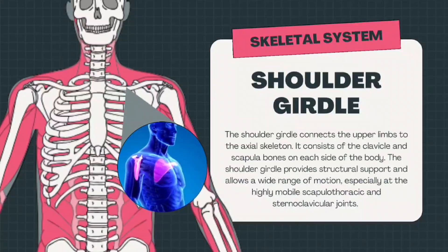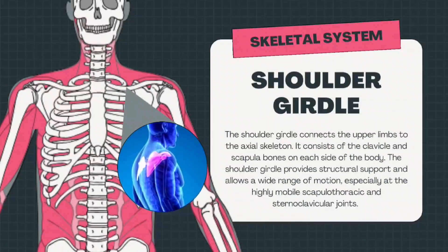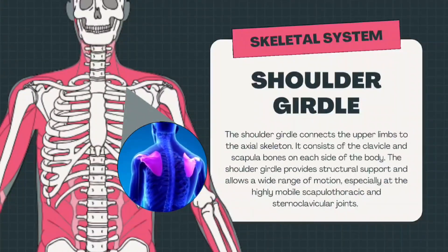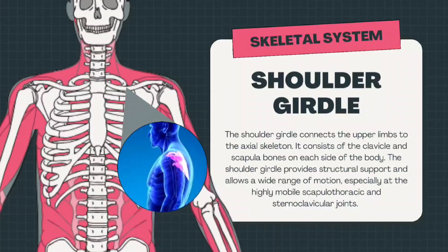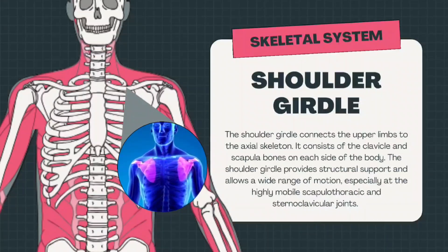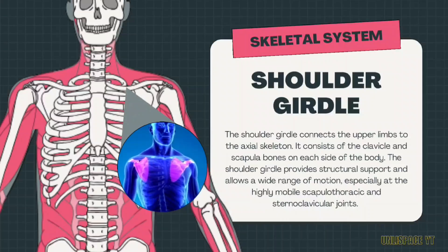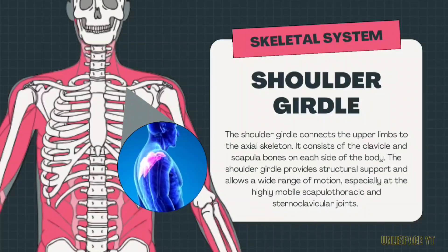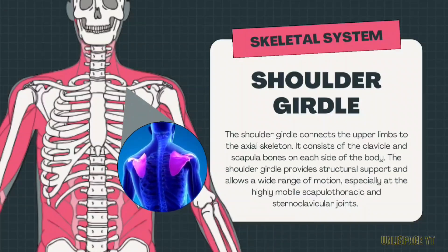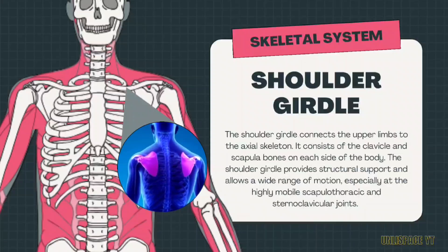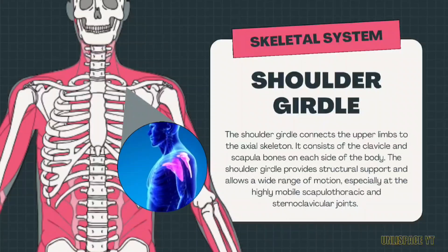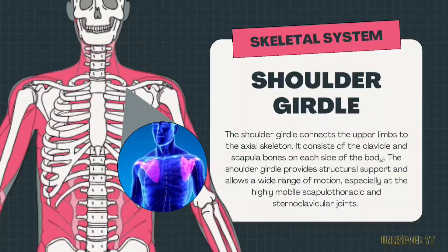The shoulder girdle connects the upper limbs to the actual skeleton. It consists of the clavicle and scapula bones on each side of the body. The shoulder girdle provides structural support and allows a wide range of motion, especially at the highly mobile scapulothoracic and sternoclavicular joints.